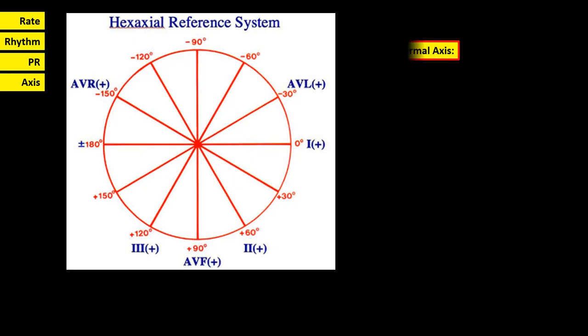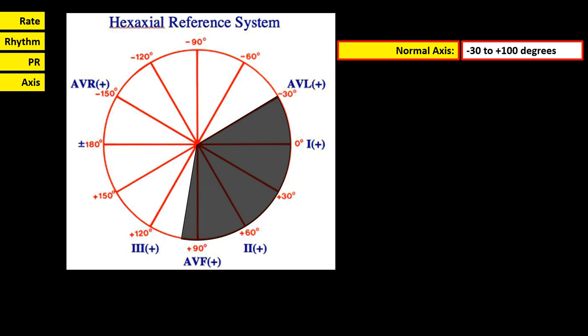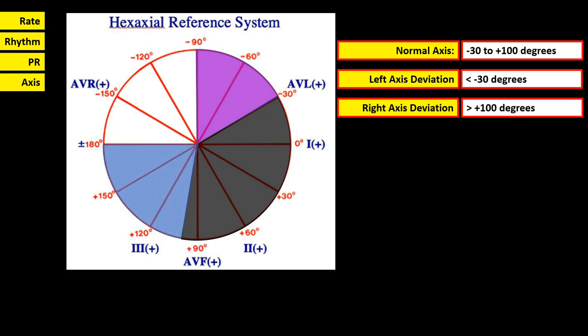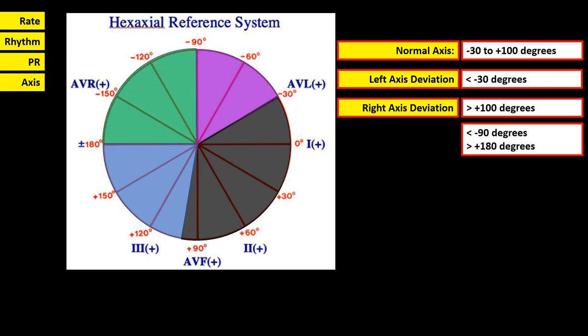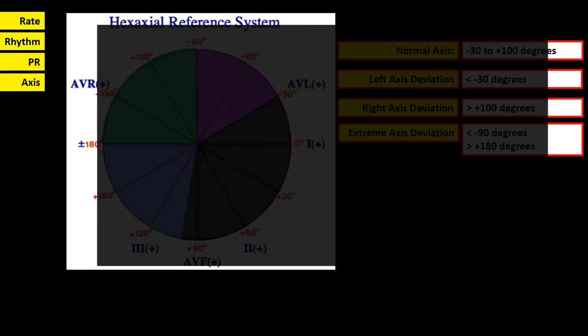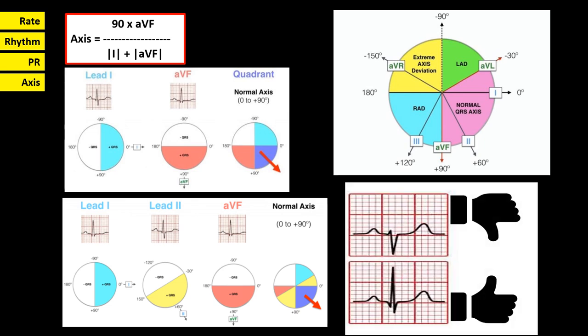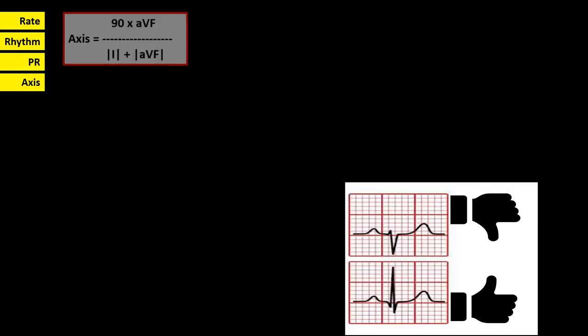The next step is to determine the axis. The normal axis is negative 30 to positive 100 degrees. Axis less than negative 30 degrees is left axis deviation. Axis more than positive 100 degrees is right axis deviation. An axis less than negative 90 degrees or more than positive 180 degrees is extreme axis deviation. There are several methods to determine the axis: formula, quadrant method, 3-lead method, isoelectric lead method, or the thumb rule. For an easier and more practical method, we will use the thumb rule and formula method depending on the situation.